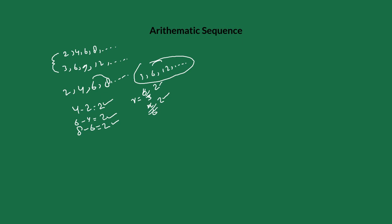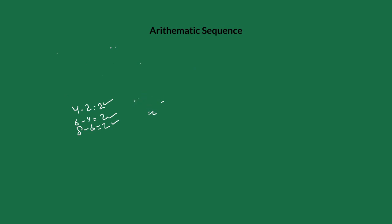Now we're going to figure out the general formula for the arithmetic sequence, or the general term of the arithmetic sequence. As we discussed, in an arithmetic sequence the difference is common for every two consecutive terms. We're going to denote the difference as: a_n minus a_(n-1) equals d. This is the same thing as second term minus first term, third term minus second term, fourth term minus third term.